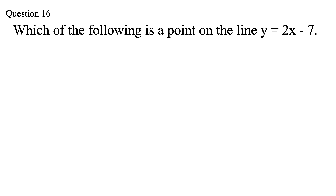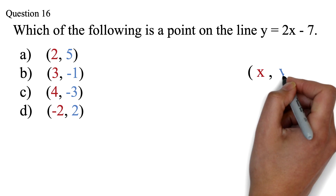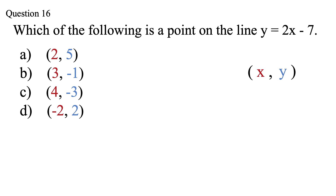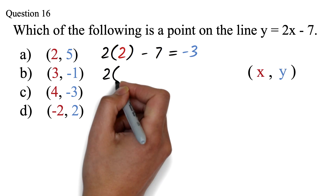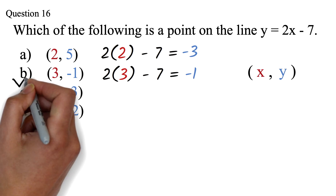Question 16: Which of the following is a point on the line y equals 2x minus 7? A: (2,5). B: (3,1). C: (4,3). D: (-2,2). For a point, the first value is x and the second is y. If a point lies on the line, inputting the x value should give the y value. For choice A: 2 times 2 minus 7 equals negative 3, not 5 — wrong. For choice B: 2 times 3 minus 7 equals negative 1, which matches the expected value. So choice B is the answer.